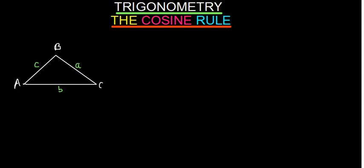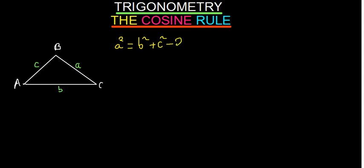So for example, if you want to find A, we will say A squared. This side squared is going to be equal to these two sides squared and added together. So A squared is going to be equal to B squared plus C squared, and then you subtract minus two BC, and then you say cos — you started with the side A, so you are going to use the angle A. This is the cosine rule.